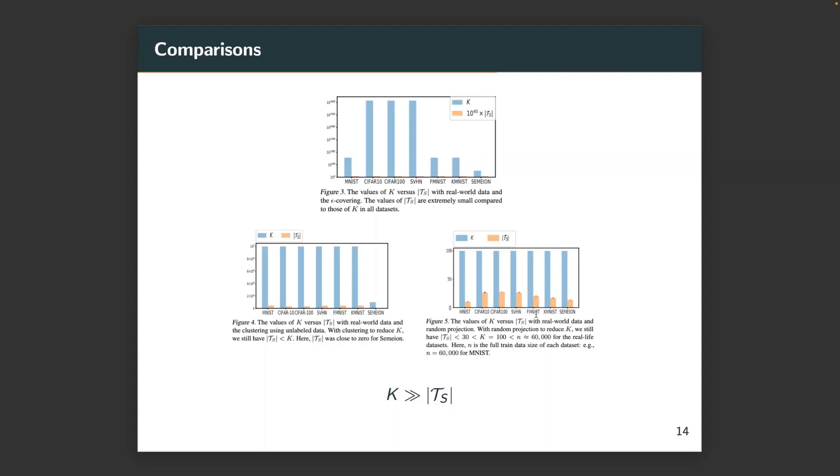Following some previous literature, we do some data-splitting in the labeled training data as unlabeled data. Figure 4 shows the value of K versus the cardinality of |T_s| for the real world data with the partition C_K being the cluster with unlabeled data. As we can see, even in that case, we significantly reduce K. The cardinality of |T_s| can be much smaller than K.